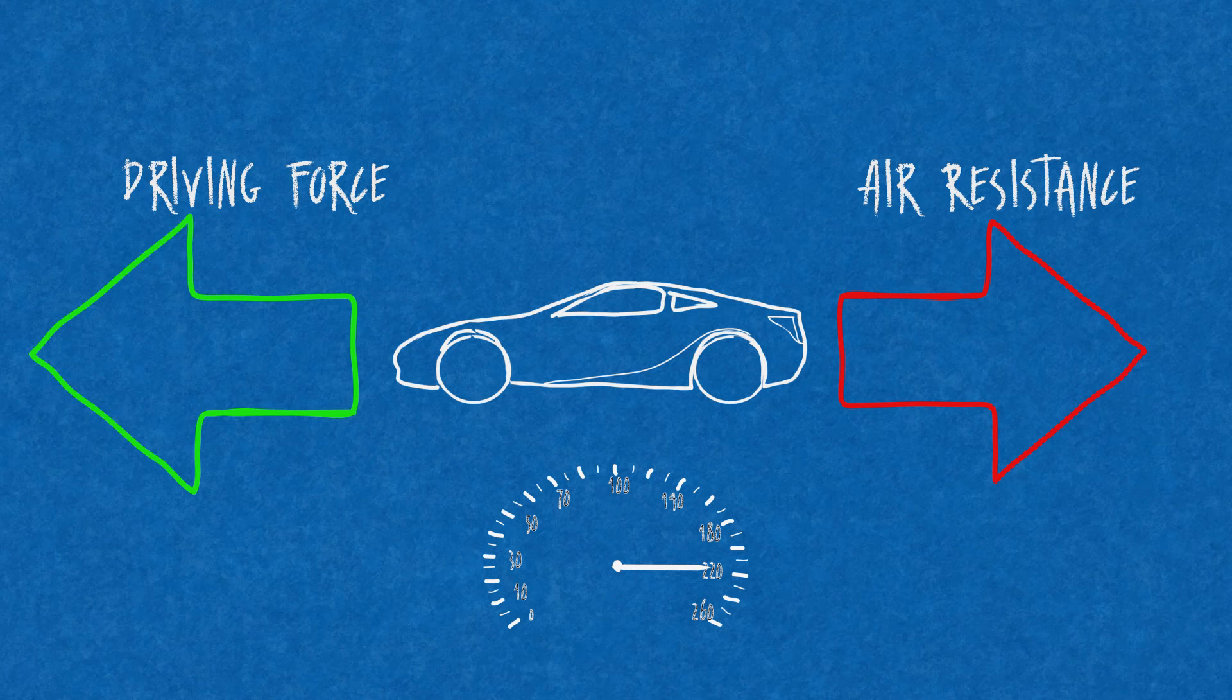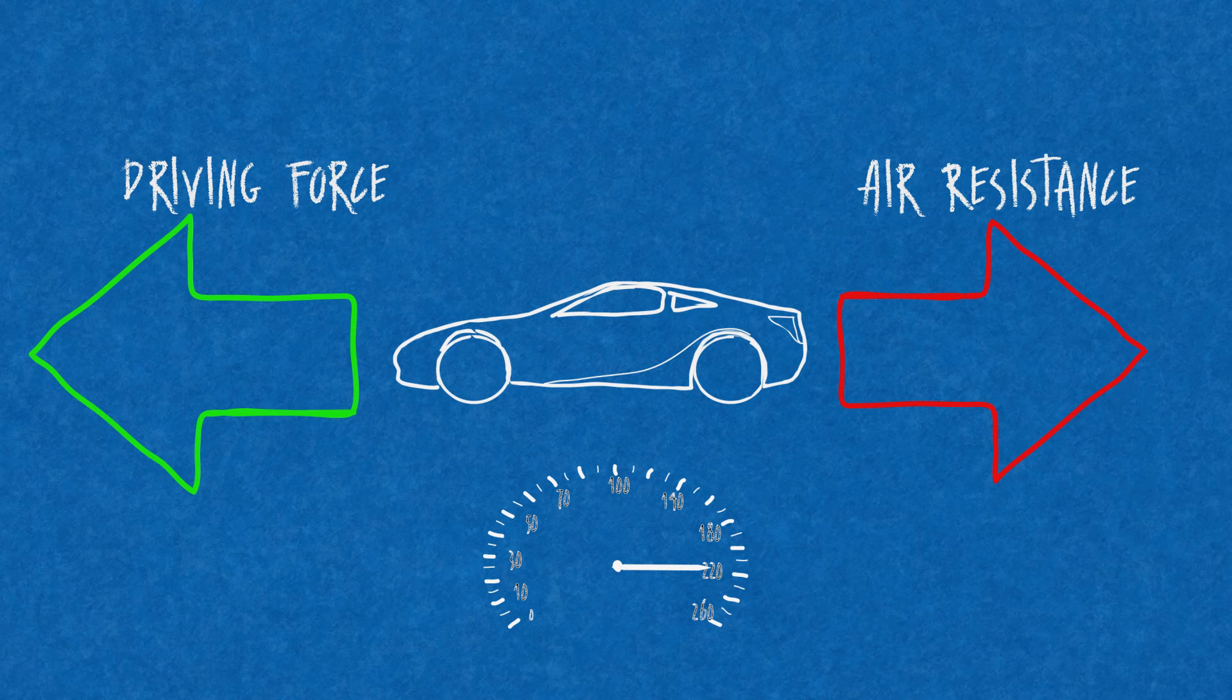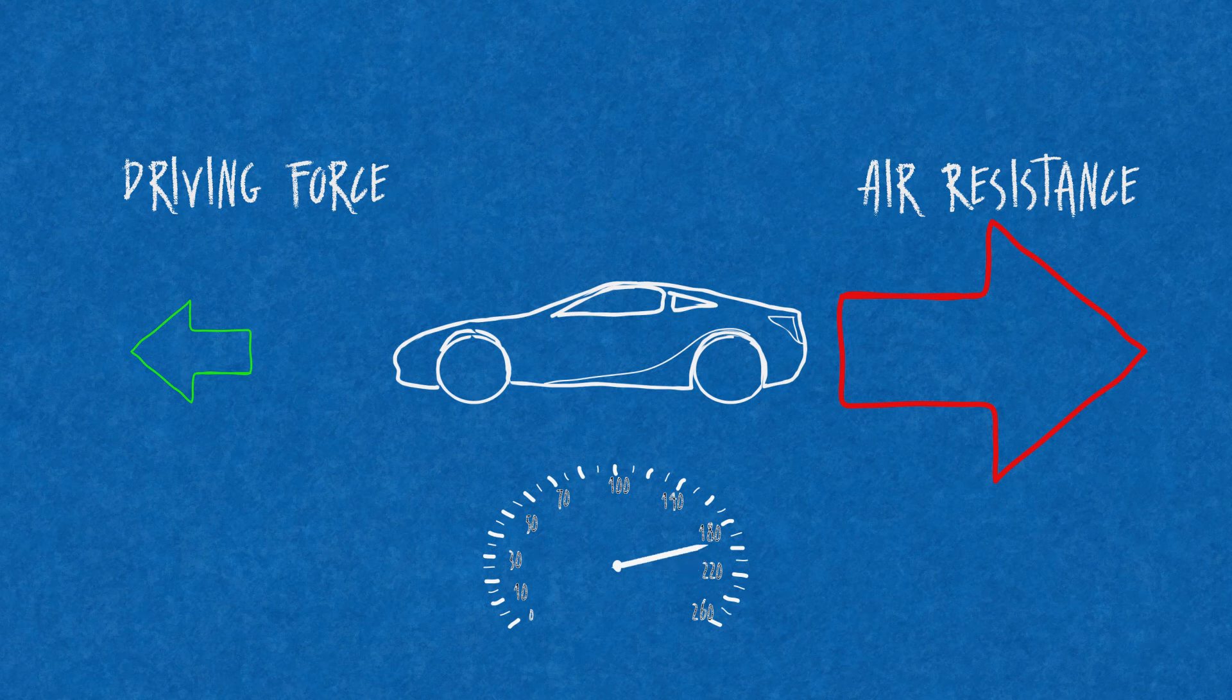If we reduce the driving force of the car, the air resistance initially remains the same, but we must make the driving force arrow smaller. The speed of the car therefore reduces, and we say that the car has a negative acceleration.